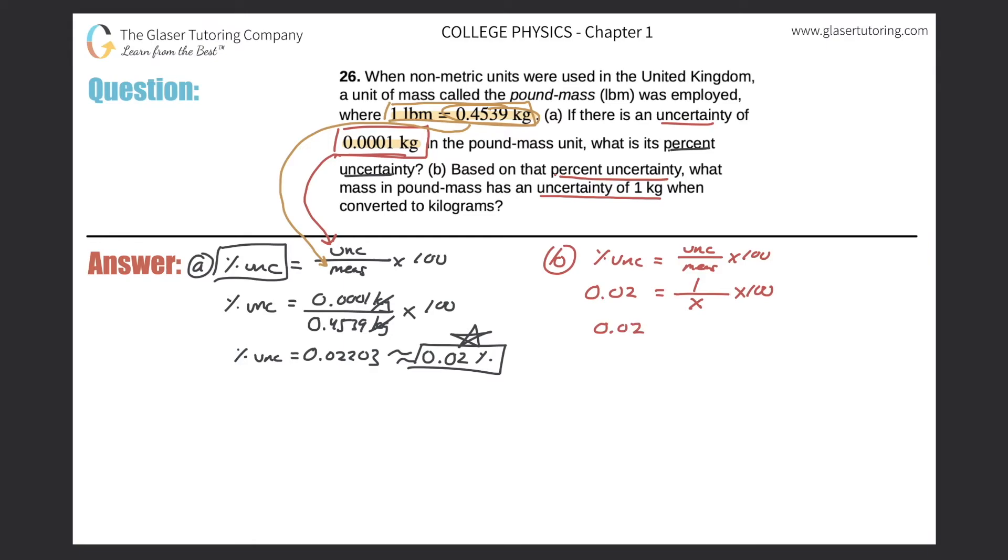So now we do some math. I'm going to cross multiply. So it becomes 0.02 x equals 100. Divide out the 0.02. Divide out the 0.02. So now x, which remember represented the measurement, will now equal 100 divided by 0.02. So that comes out to 5,000. Now I'm not going to put a decimal in here. Because if I do, that means that I have four significant figures. But if I leave the decimal out, that means I have only one significant figure. And since I have one significant figure in my calculation, I'm going to leave it at this.